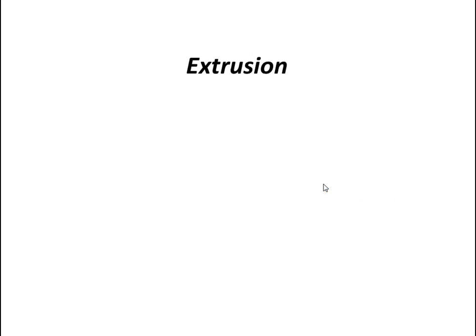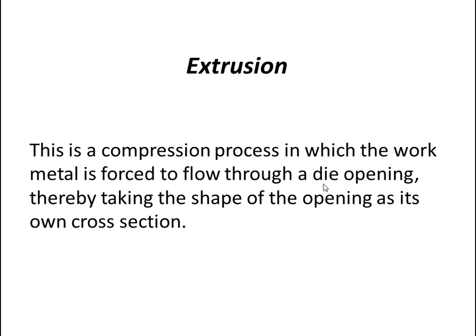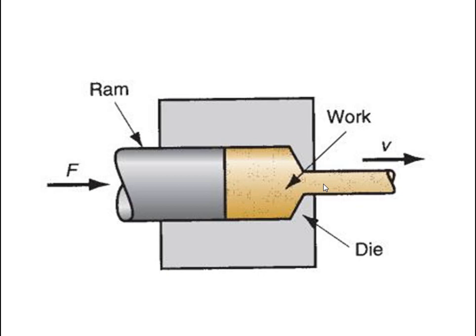The third process is extrusion. Extrusion is a compression process in which the work metal is forced to flow through a die opening, thereby taking the shape of the opening as its cross section. In the diagram, there is a die and a work part. A ram applies a pushing force, driving the work part through the die opening in one direction, causing the work part to become thinner.